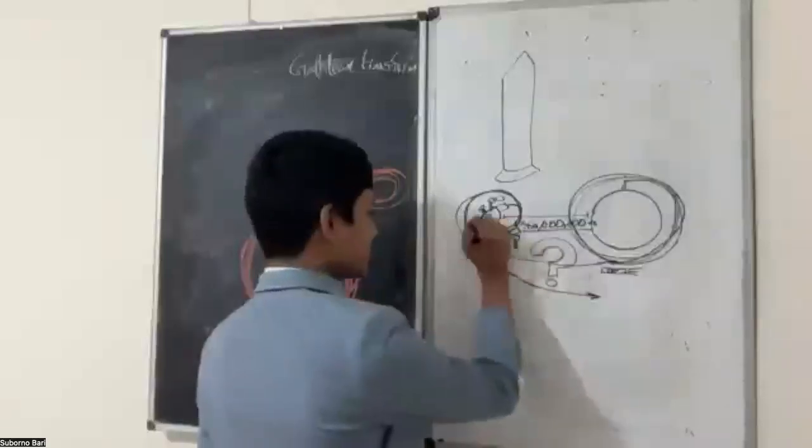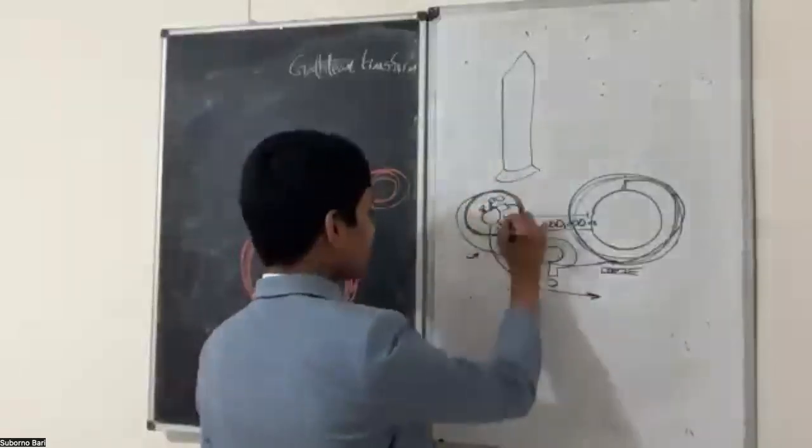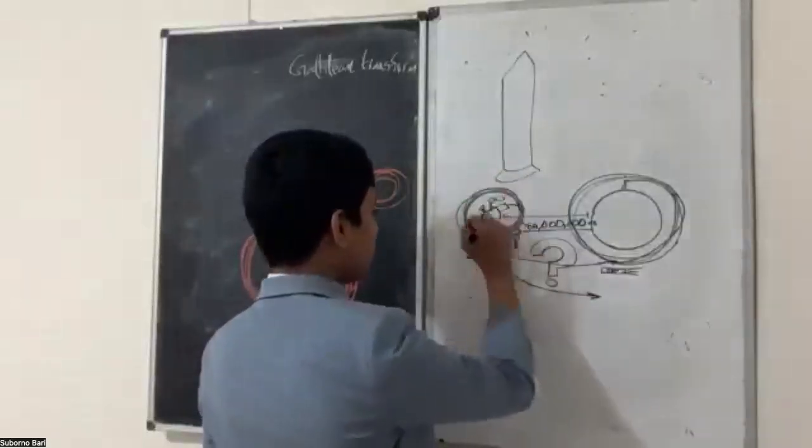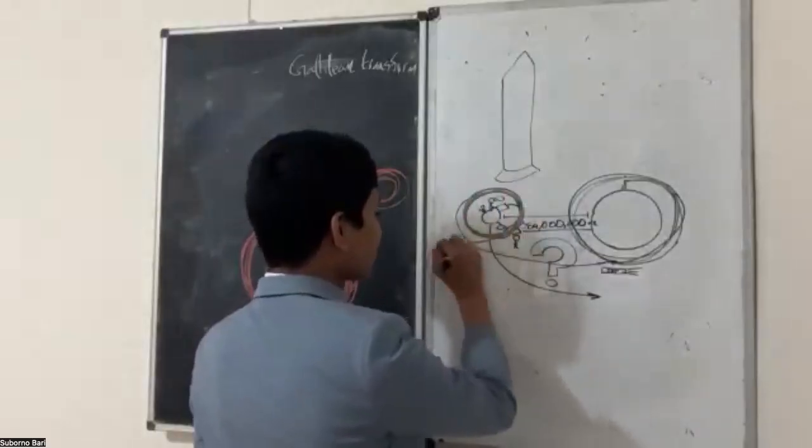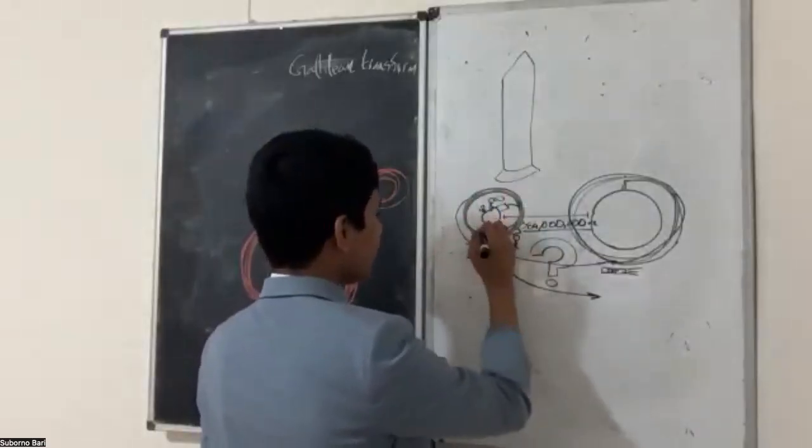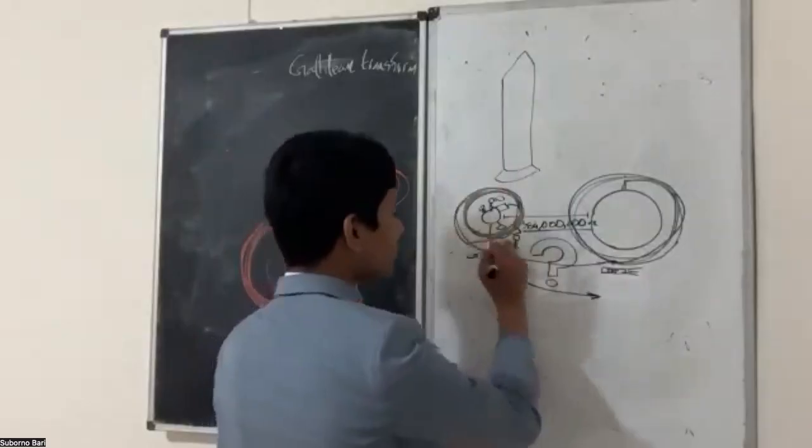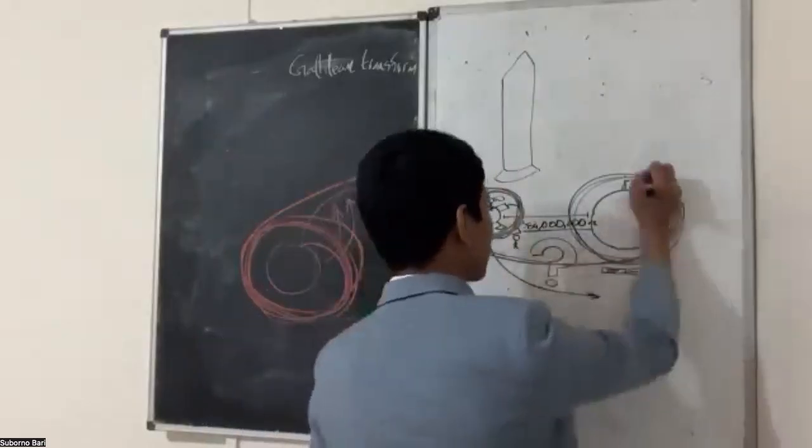And after all of that, they managed to, on a free return trajectory, go all the way back. I drew things the wrong way. They managed to go all the way back to the earth without having to do any more course corrections.